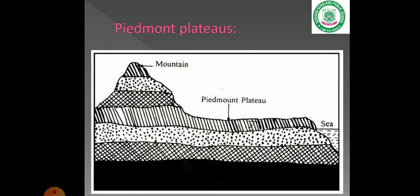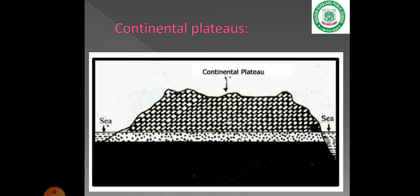We can see why they are classified by their surrounding area. Inter-mountain plateaus have mountains on both sides, while Piedmont plateaus have a mountain on one side and open terrain on the other side.